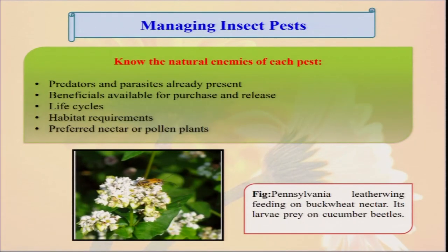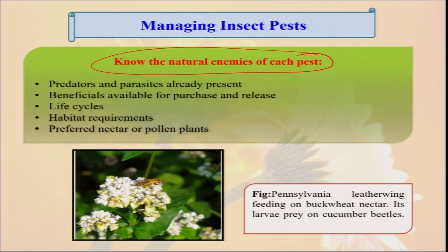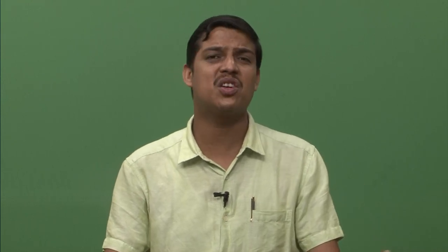Managing insect pests is very important. Very important is the natural enemy. In nature, there is a balance. When one population increases, there are some other insects that will eat them, and that balance will be maintained in the ecosystem. But over the agricultural years, we are growing some type of monocrops year after year. So we are disturbing this ecological balance in nature, due to which lots of insect pests and diseases are coming. We have to promote in our organic farming knowledge of what are the different types of beneficial insects present in the atmosphere. We have to promote these beneficial insects so that they can kill other harmful insects on their own.